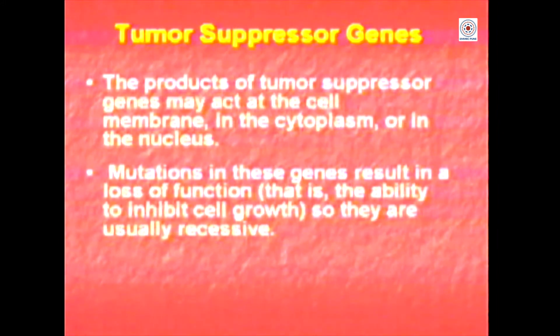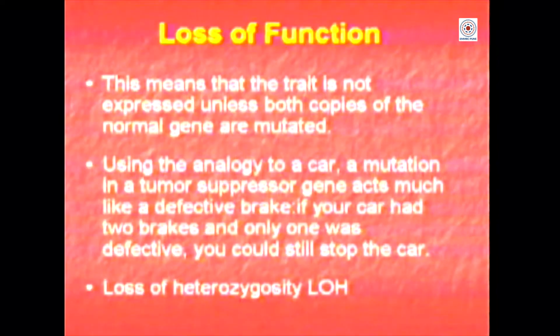A whole lot of tumor suppressor genes have been identified today — they can act at the cell surface, in the cytoplasm, or in the nucleus. Mutations in them are recessive because if you have a good copy of the regulator it still functions. For example, if you have two brakes, even if one brake fails you can still control the car with the second brake. This means the trait is not expressed unless both copies are mutated — this is called loss of heterozygosity, and it is one way to detect or diagnose cancer or predisposition.